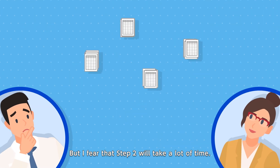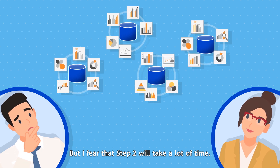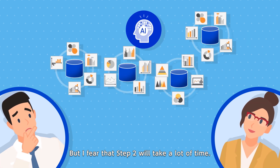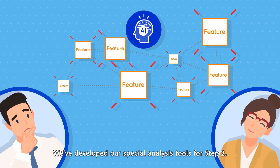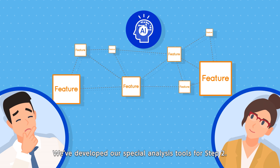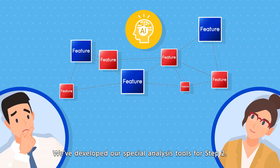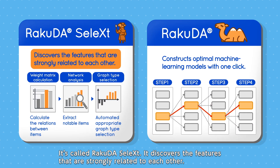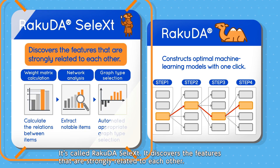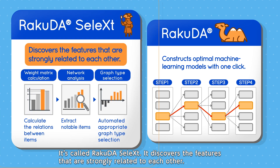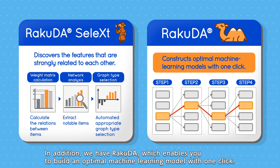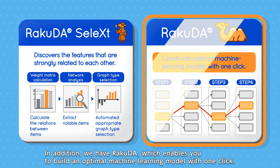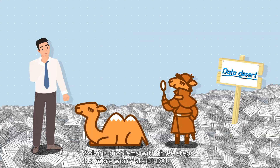But I fear that step two will take a lot of time. We've developed our special analysis tools for step two. It's called Rakuda Select. It discovers the features that are strongly related to each other. In addition, we have Rakuda, which enables you to build an optimal machine learning model with one click.